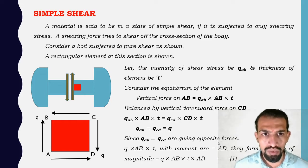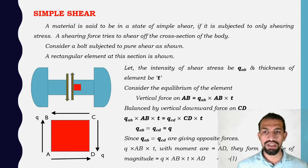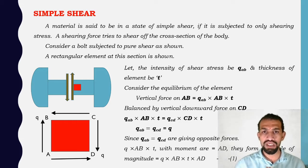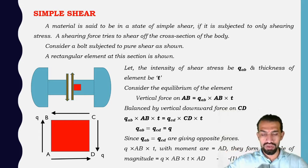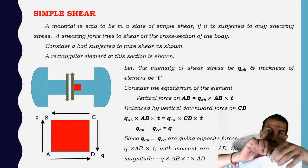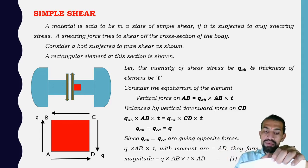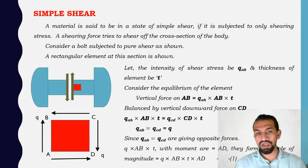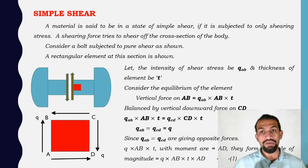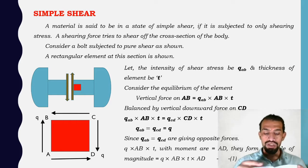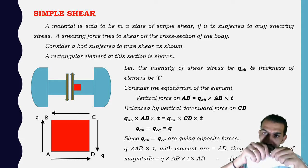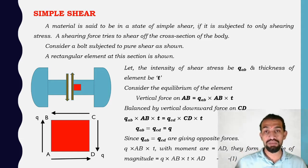So what is simple shear? A material is said to be in a state of simple shear. Simple shear can be understood like cutting a paper in the middle. So that is simple shear — when a shearing force tries to shear off the cross section of a body, that is simple shear acting on it.